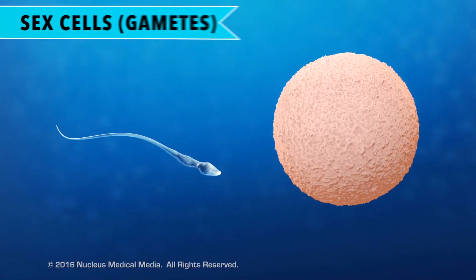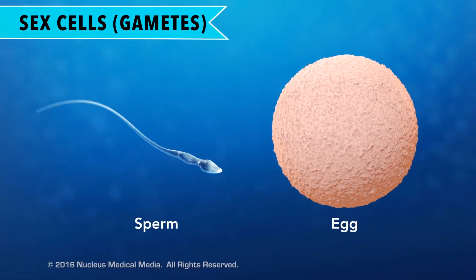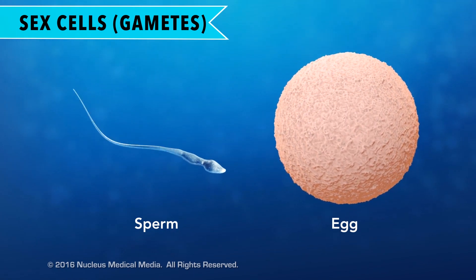In a modified example of cell division, sex cells, called gametes, are made.